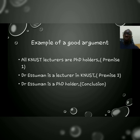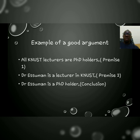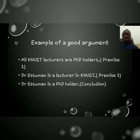Now, let's look at an example of a good argument. Premise 1: All KNUSD lecturers are PhD holders. Dr. Esumann is a lecturer in KNUSD. Therefore, Dr. Esumann is a PhD holder. This is an epitome of a good argument because it's valid. It's valid because the premises guarantee the conclusion. There is a logical flow right from the second premise — you can even close your eyes and predict what the conclusion will be. Also, the premises are plausible, and the premises are more plausible than the conclusion because the conclusion just rests on the strength of the premises.